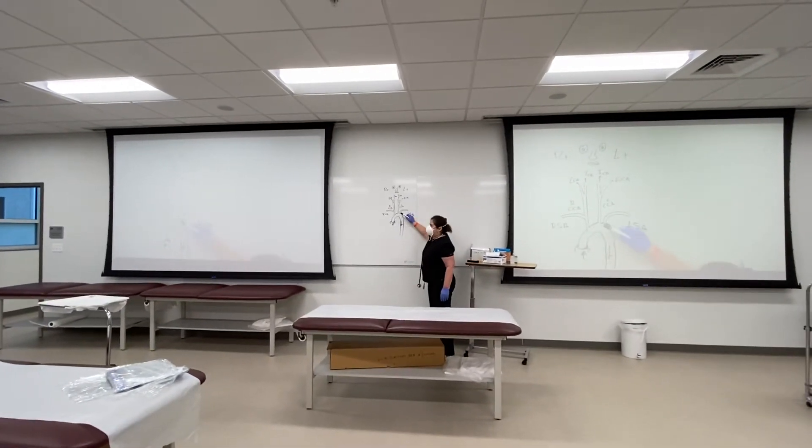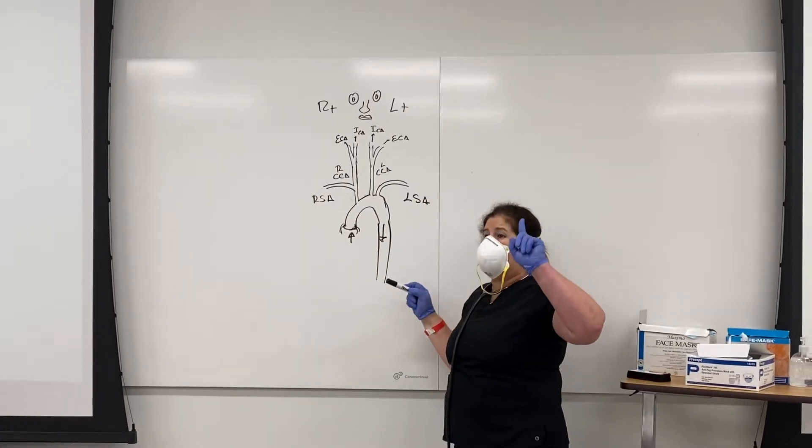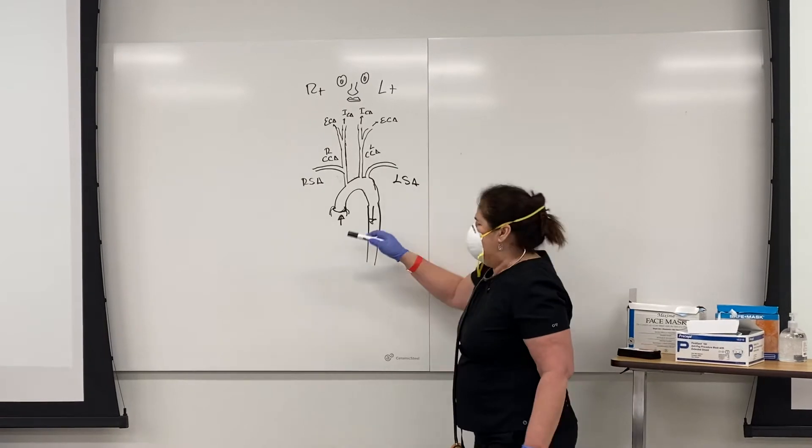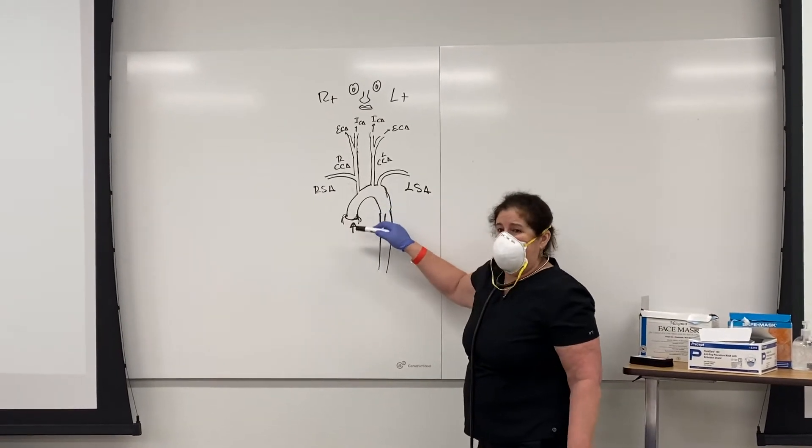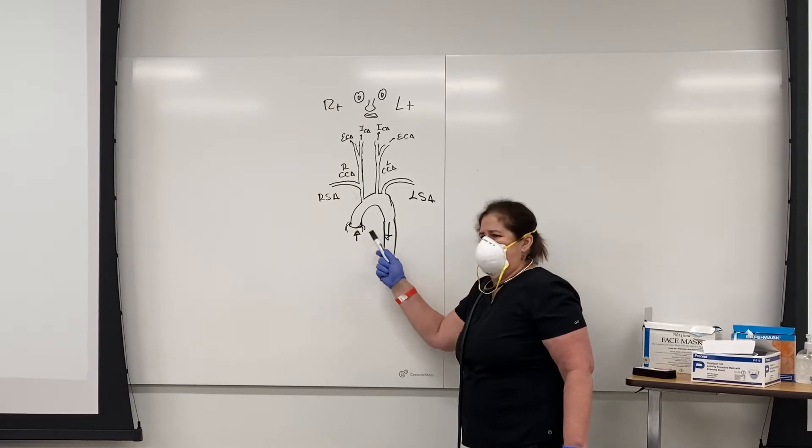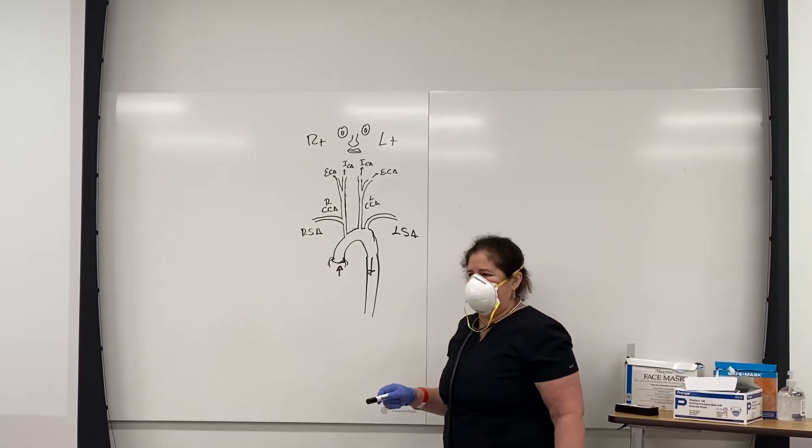Then in the aortic arch, we're going to have the first arteries that are arising from the ascending aorta at the root of the aorta, which are the coronary arteries—the right and left coronary arteries.